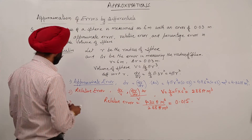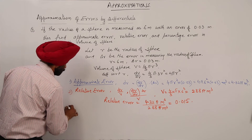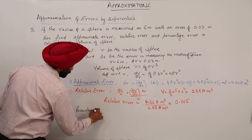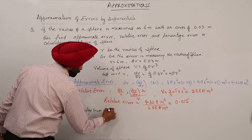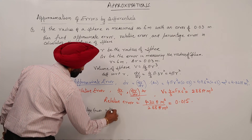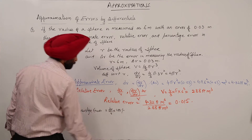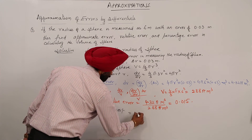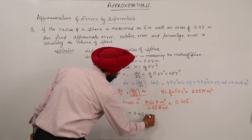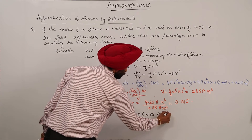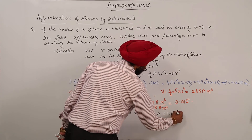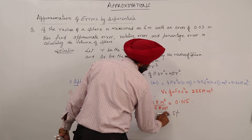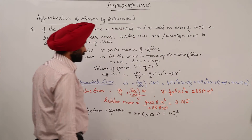Number 3: Percentage error. Percentage error = (dV/V) × 100. This equals 0.015 × 100, which gives 1.5 percent.